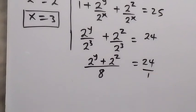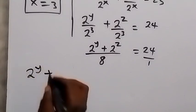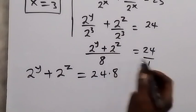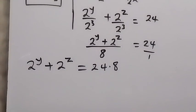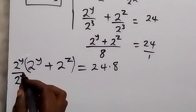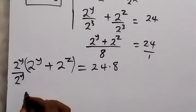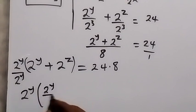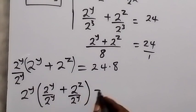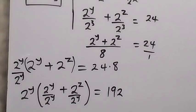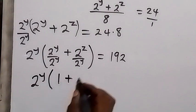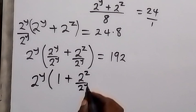By cross multiplying, we get 2^y plus 2^z equals 24 times 8, which is 192. We can also multiply the left hand side by 2 raised to power y and divide by 2 raised to power y, taking it inside the bracket: 2^y into bracket (2^y divided by 2^y plus 2^z divided by 2^y) equals 192. Simplifying, this is 2^y into bracket (1 plus 2^z over 2^y).